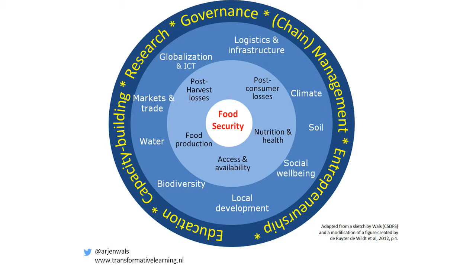Similarly, looking at food security, it involves many aspects: post-consumer losses, post-harvest losses — how can we reduce those? How can we increase food production but also increase access and availability, improve nutrition and health? And going a layer outside, you have to look at logistics, infrastructure, globalization, and ICT — how can that help, and how does it affect climate?